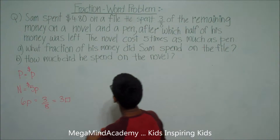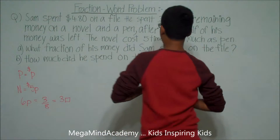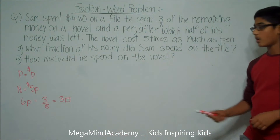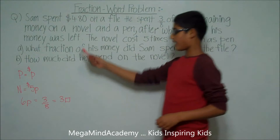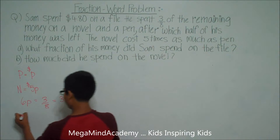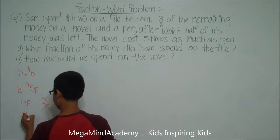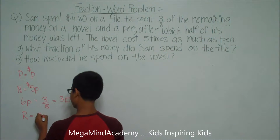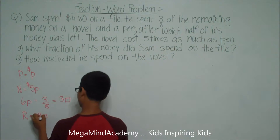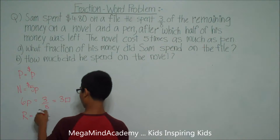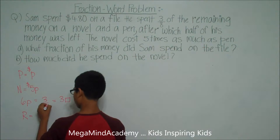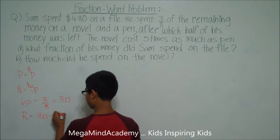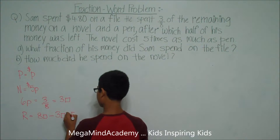We also know that after buying the novel and pen, half of his money was left. So the remaining amount R is equal to eight units, which is the denominator or the whole. Eight units minus three units is equal to five units.